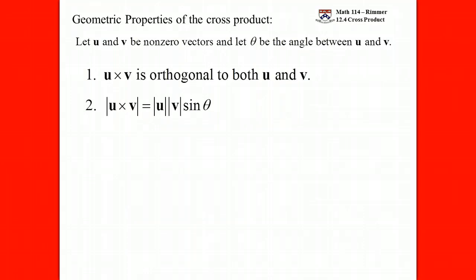The right-hand side looks a lot like something you saw when doing the dot product: the magnitude of one vector times the magnitude of the other vector times the sine of the angle between them. Now it's not equal to just the cross product itself, because that'd be a vector. On the right-hand side we definitely have a number — magnitudes multiplied together give a number, and the sine of the angle is a number. So on the left-hand side we're talking about the magnitude of U cross V. The magnitude of U cross V equals the product of the magnitudes times the sine of the angle.